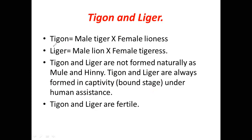Liger and Tigon are formed only when humans conduct experiments in forestry or zoology and keep these animals in captivity. They are exceptions to the biological species concept because species should freely interbreed to produce fertile offspring naturally, but Tigon and Liger require human assistance. On the other hand, mule and hinny are very common and are naturally produced, resulting in sterile organisms because the horse and donkey do not belong to the same species.